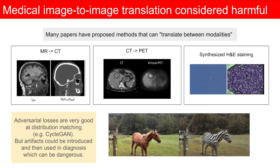However, if the distributions are not representative or the networks are not perfect, then these networks can hallucinate a target image and, depending on how they are deployed, can mislead a physician.